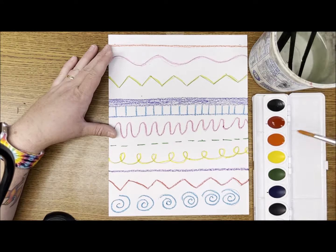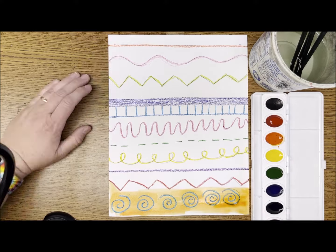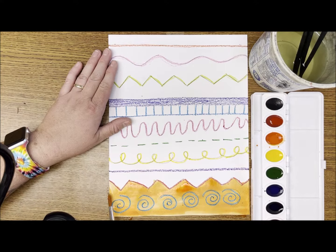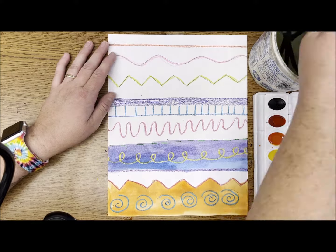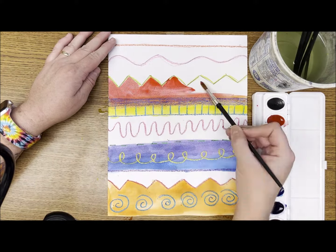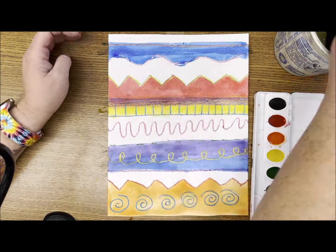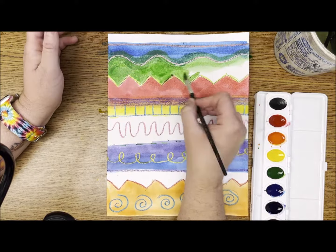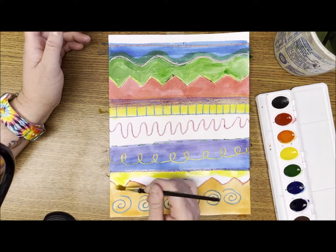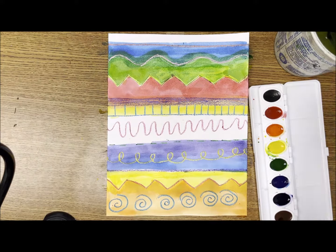Now that I've traced all of my lines with crayon, I'm ready to paint. I've added water to each of my watercolors and I'm layering colors in each section of my line design. I used a variety of colors in between each of the lines and even double layered colors to create new ones.